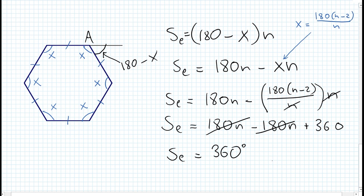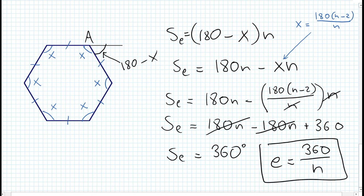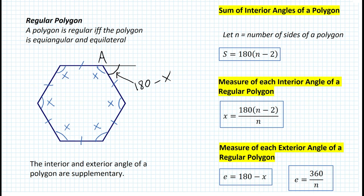So if we want to find each exterior angle, we can simply divide 360 by n. That's how we find the exterior angle when the interior angle is unknown and we cannot use the supplementary method. To summarize, the measure of each exterior angle of a regular polygon is not only 180 minus x, it can also be calculated by taking 360 divided by n. Now, how is it possible that the sum of all the exterior angles equals 360? Well, there's actually a visual way to see it.